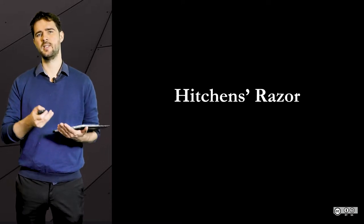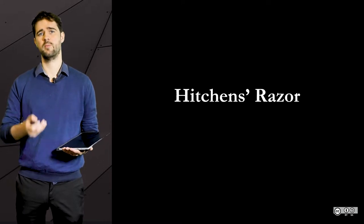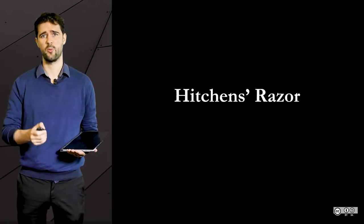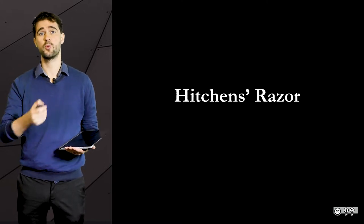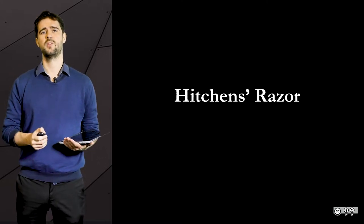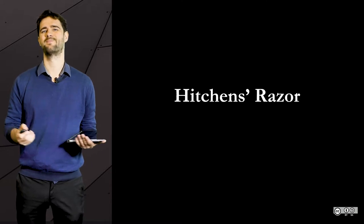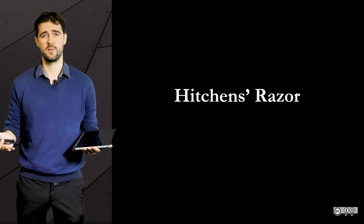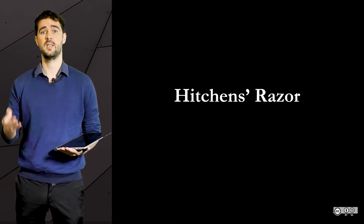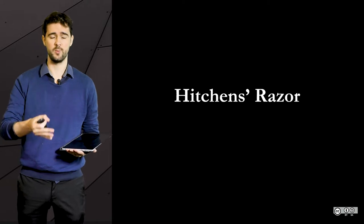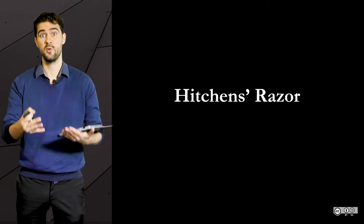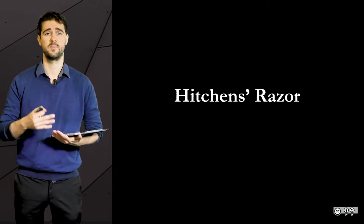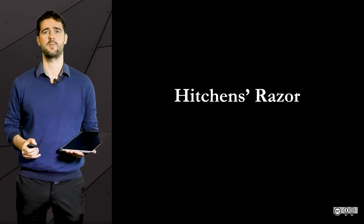In this kind of situation, the one who makes the claim — especially if it's a strong, extraordinary one — is the one who should prove it. So in the case of the unicorn, for instance, the person who makes the claim is the one who has to prove that they can turn into a unicorn. You don't have to do anything.